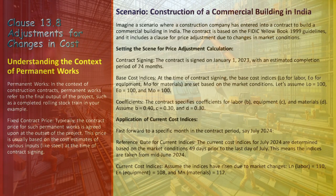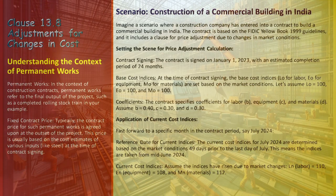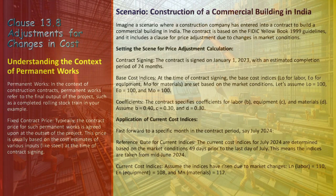The same price adjustment formula PN = A + B(LN/L0) + C(EN/E0) + D(MN/M0) is applied, where A, B, C, and D are predetermined coefficients representing various cost elements related to the rolling stock supply. For such a project, the indices would likely include specific costs relevant to rolling stock, such as manufacturing costs, material prices, and labor costs associated with production and assembly. Assuming the fixed coefficient A = 0.10, and current cost indices LN, N, MN are updated based on market conditions at a reference time.